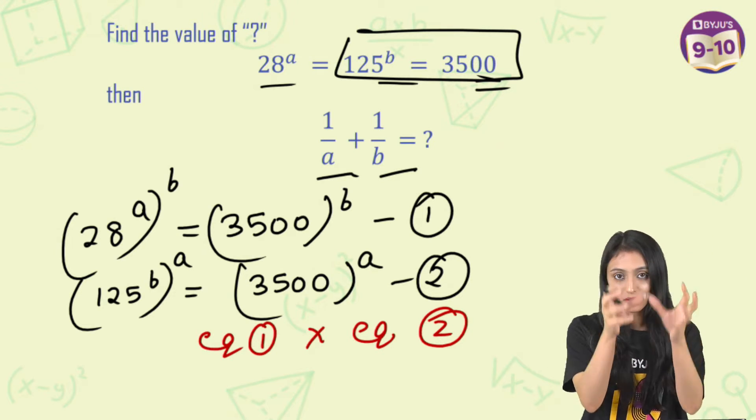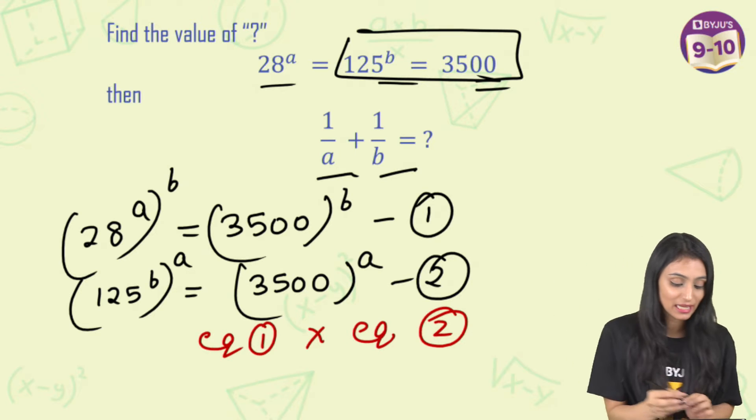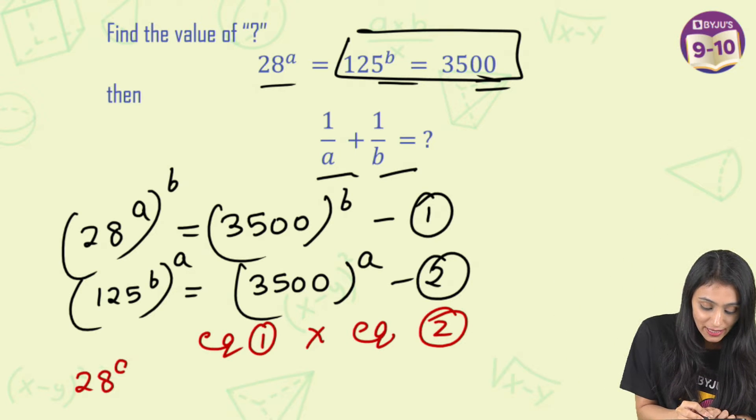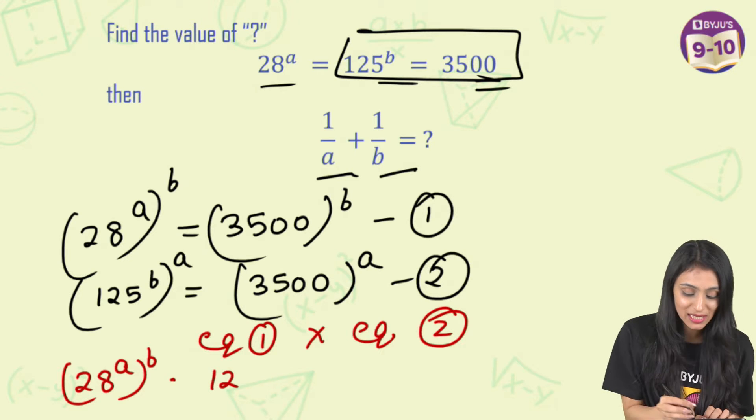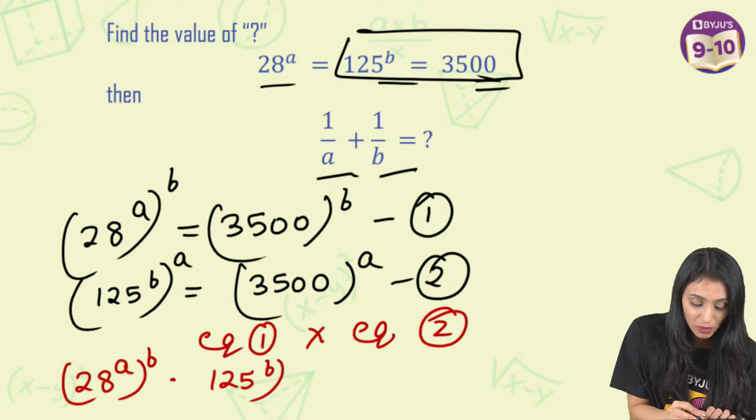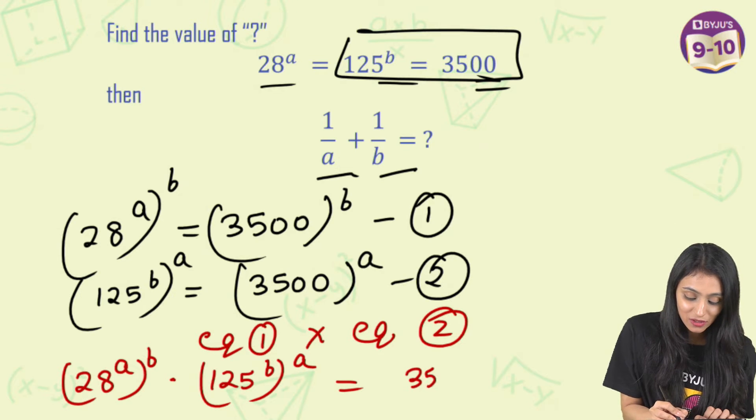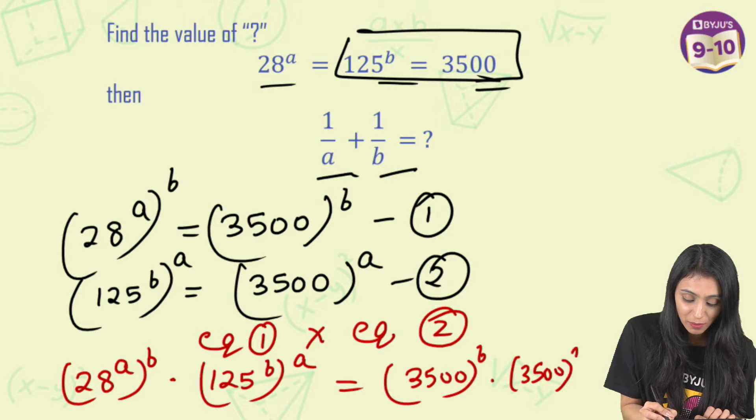So we simply multiply whatever is written on the left and whatever is written on the right. So on left we have 28 to the power AB multiplied with 125 to the power BA. Similarly here it is 3500 to the power B multiplied by 3500 to the power A.